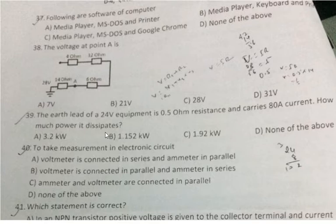Question 39: The earth lead of a 24V equipment is 0.5 ohm resistance and carries 80 ampere current. How much power is dissipated? Power formula is I squared R. I squared R: that is 80 squared times 0.5. The correct answer is I squared R. First option is 3.2 kilowatts.